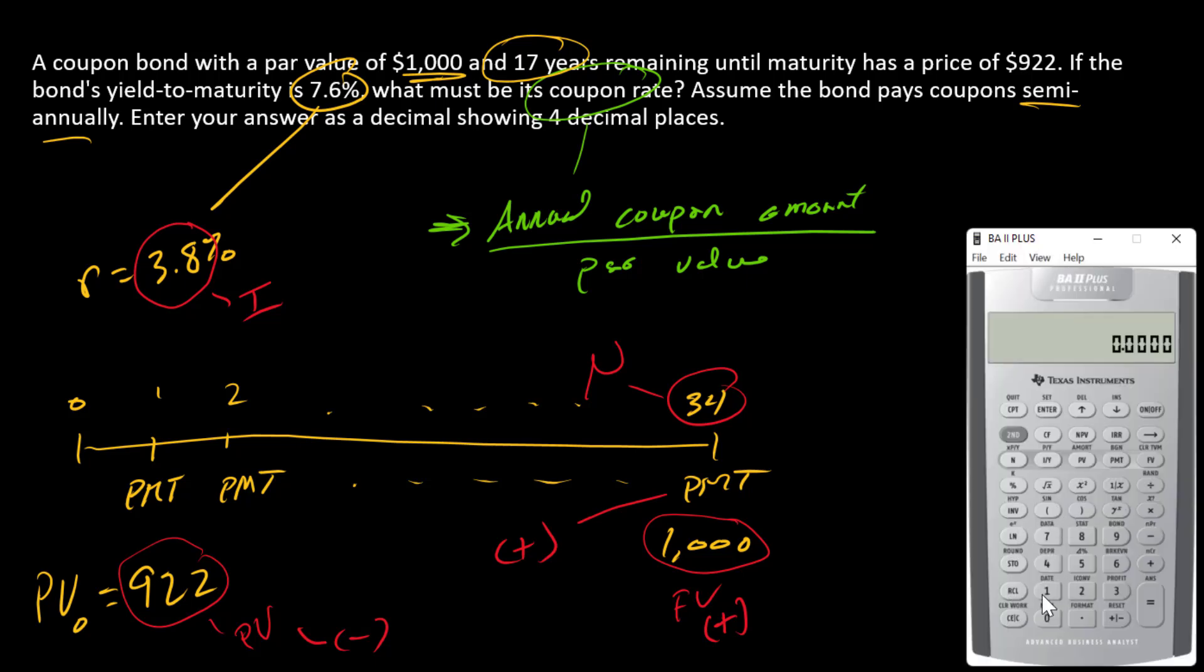All right, go to our financial calculator and see if we can find this payment. $1000 is FV, $922 give it a negative sign that's PV, 3.8 goes into i and 34 goes into N. Compute payment and there I have payment, so payment is $33.8754.